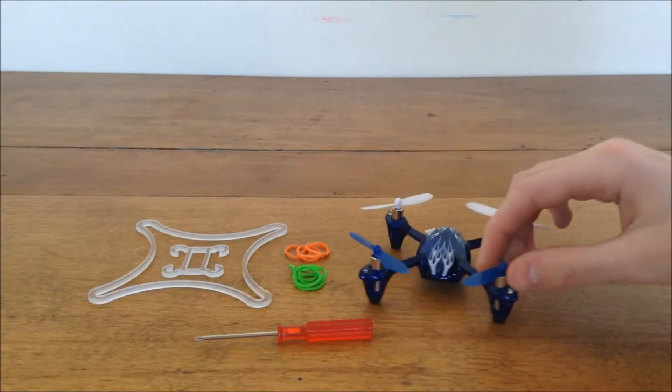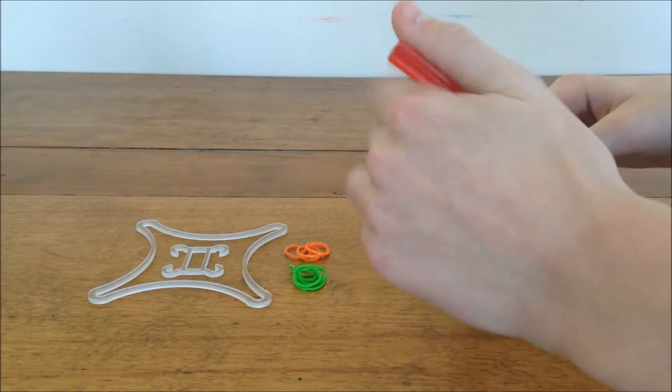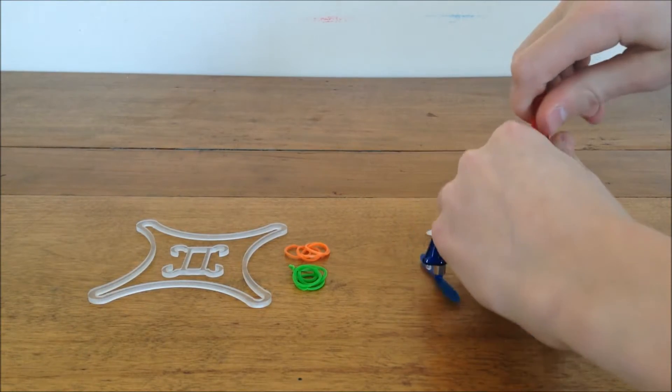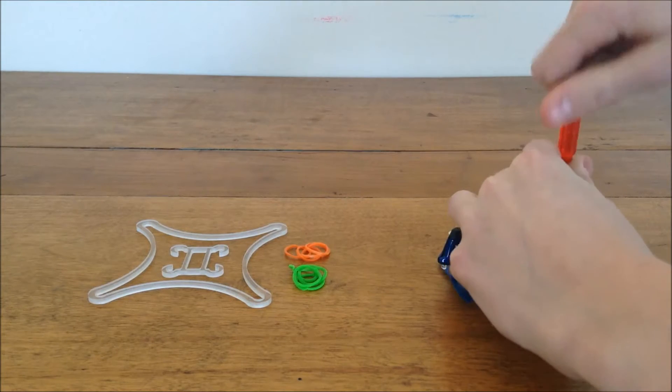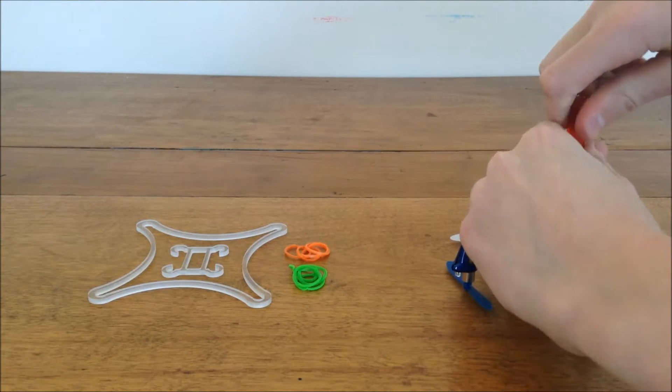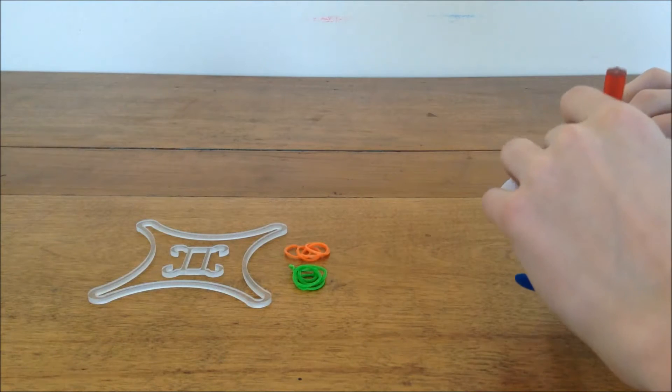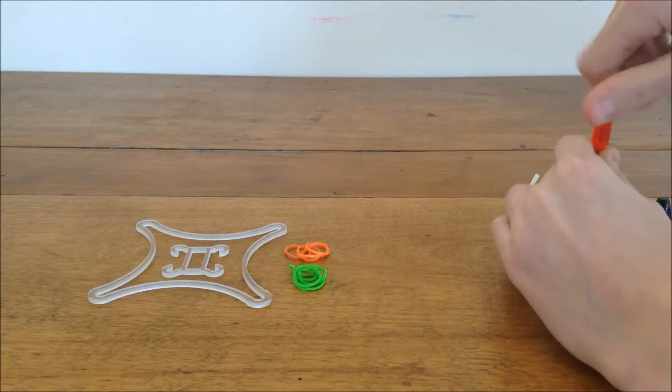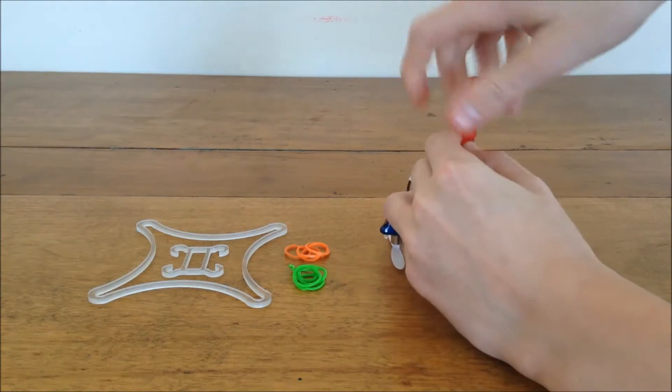So the first thing you want to do is open up your Hubsan, or whatever micro quad you have. In this case I'm using the Hubsan. Open it up, there's a couple screws in here. It's really tight because this has never been opened from the factory.